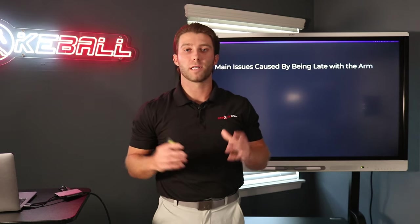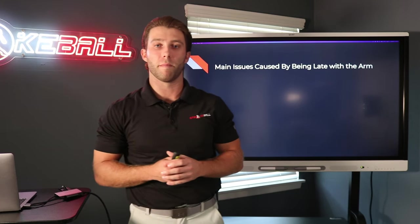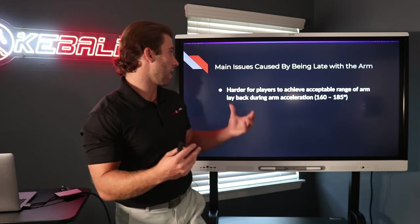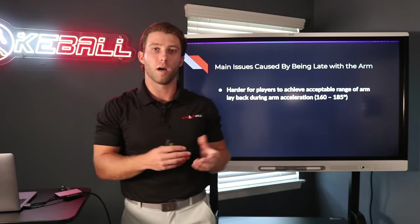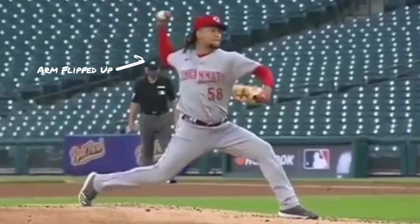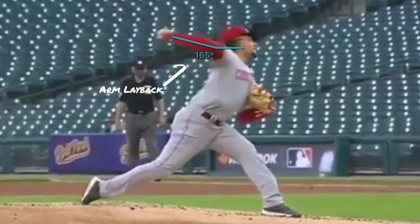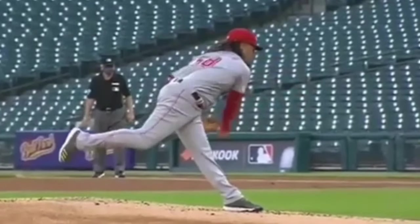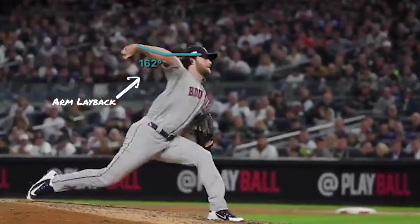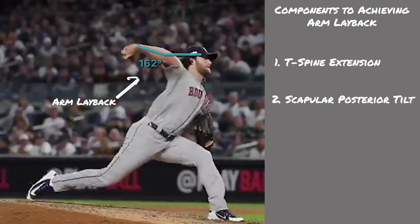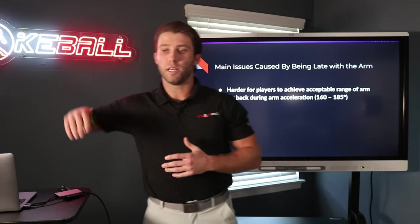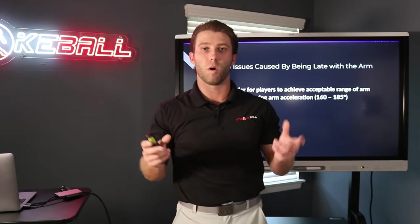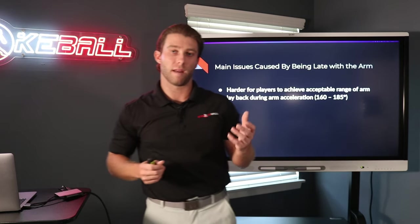In the next portion of this video I want to cover some of the main issues that are caused by being late with the arm into front foot strike. The first one we generally see is it becomes harder for players to achieve the acceptable range of arm layback during the arm acceleration phase — that's between 160 and 185 degrees. Arm layback is a mechanical concept that is ultimately the combination of thoracic extension, scapular posterior tilt, as well as true shoulder external rotation. So it's not just the shoulder that's getting into that 160 to 185 degree range, but the shoulder external rotation we get into front foot strike through arm flip up ultimately helps us get there.